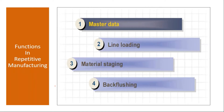The main functions in repetitive manufacturing are: first, you create all the master data, then planning and line loading, then material staging and backflushing, and confirmation. We will see all these functions one by one.